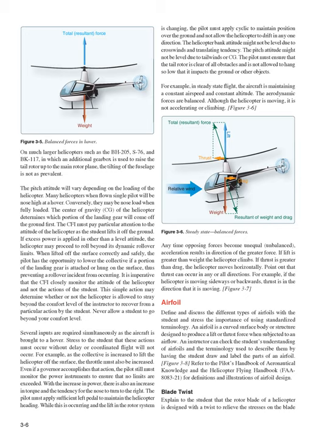In steady-state flight, the aircraft is maintaining a constant airspeed and constant altitude — the aerodynamic forces are balanced. Although the helicopter is moving, it is not accelerating or climbing. Any time opposing forces become unequal (unbalanced), acceleration results in the direction of the greater force. If lift is greater than weight, the helicopter climbs; if thrust is greater than drag, the helicopter moves horizontally. Thrust can occur in any or all directions — for example, if the helicopter is moving sideways or backwards, thrust is in the direction it is moving.